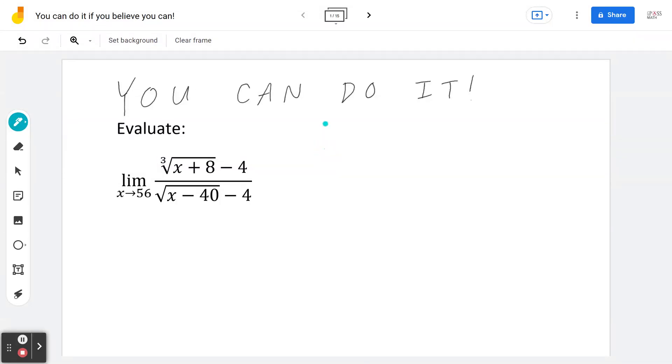Hi, everyone. Let's take a look at the following grade 12 calculus and vectors limit example. Find the limit of the cube root of x plus 8 minus 4 all over the square root of x minus 40 minus 4 as x is approaching 56.